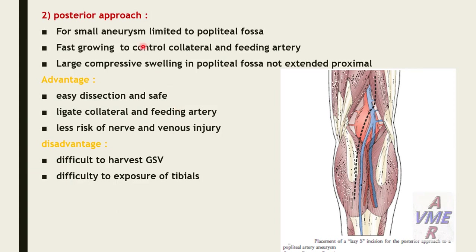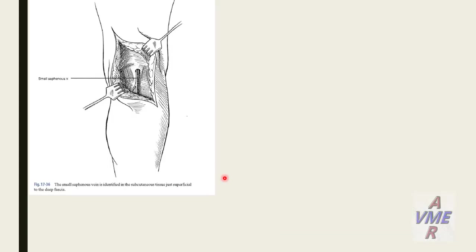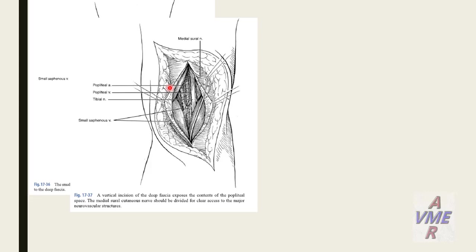Posterior approach is fit for small aneurysms limited to the popliteal fossa, fast control of collaterals and feeding artery, and large compressive swelling in popliteal fossa not extending proximally. Advantage: easy dissection and safe, ligation of collaterals and feeding arteries, less risk of nerve and venous injury. Disadvantage: difficult to harvest saphenous vein and difficult exposure of tibial vessels. For exposure via posterior approach, the small saphenous vein is identified in subcutaneous tissue just superficial to deep fascia. Vertical incision of deep fascia exposes popliteal fossa contents. The medial short cutaneous nerve should be divided for clear access. Structures identified include tibial nerve, popliteal vein, popliteal artery, and both heads of gastrocnemius muscle.